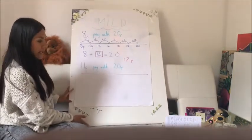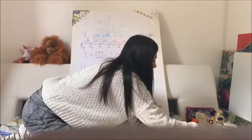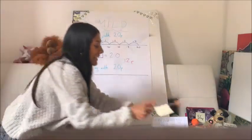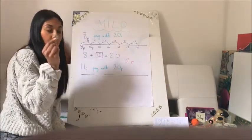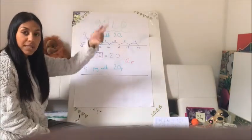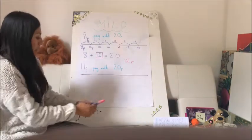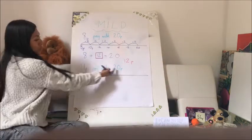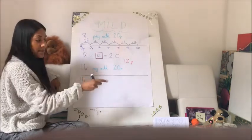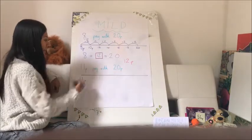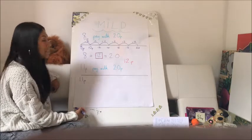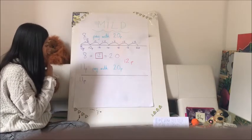Now we have another one. Here I have a pencil and it costs 11p. Again, I only have 20p that I want to pay with. So I'm going to use a blank number line and the counting on method. My smaller number — 11p — is the cost of the item. I pay with 20p, so now I need to count on until I get to 20p.